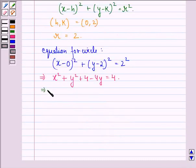This further implies here we see that plus 4 gets cancelled with plus 4 and we are left with x square plus y square minus 4y is equal to 0.